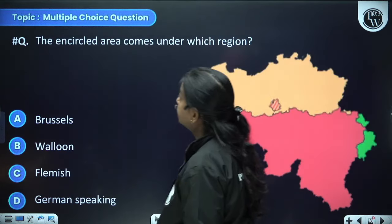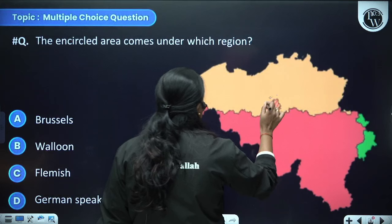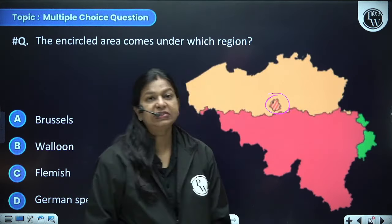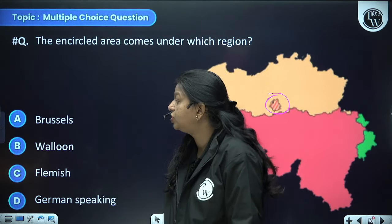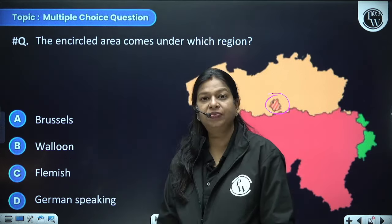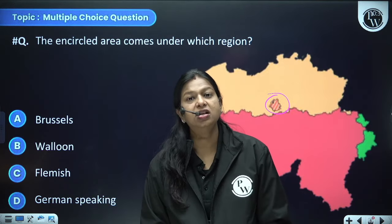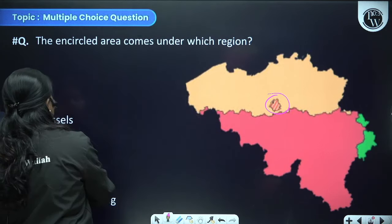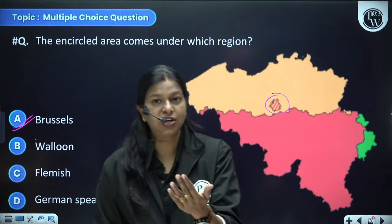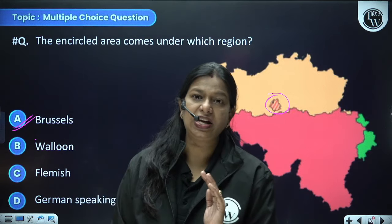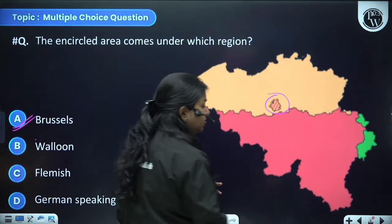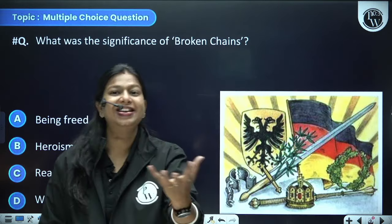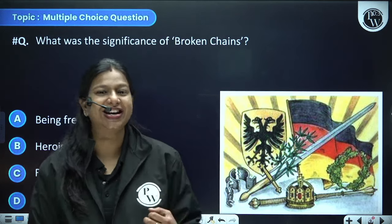The encircled area comes under which region — Brussels, Walloon, Flemish, or German speaking? The answer is option A, Brussels, which is the capital of Belgium, where 80% of the population was French speaking and 20% was Dutch speaking. This posed a problem for the majority in the rest of the country that was Dutch speaking.